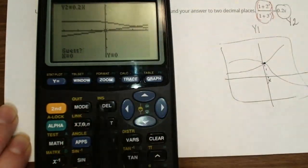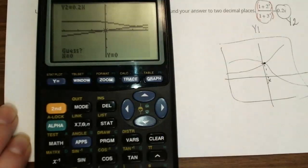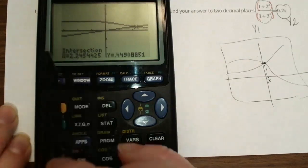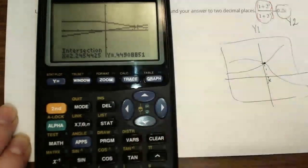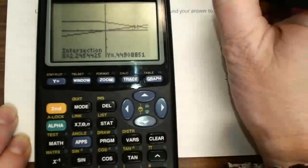Enter, Enter. Now you have Guess, but it's not what you're looking for. So you have to press Enter one more time. And now you have the word Intersection, and x equal to.